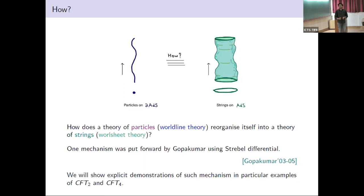But it's magical that a field theory can reorganize itself into a string theory. For example, take a particle. If it moves in spacetime, it creates a trajectory called a worldline. If a string moves in spacetime, it creates a 2D surface called a worldsheet. So how can a theory of particles, theory of trajectories, reorganize itself into a theory of surfaces, theory of areas? One mechanism for this was put forward by Rajas a few years ago. We will show explicit demonstrations of this mechanism in particular examples of 2D CFT and 4D CFT.